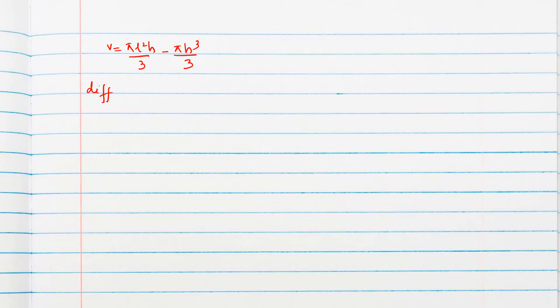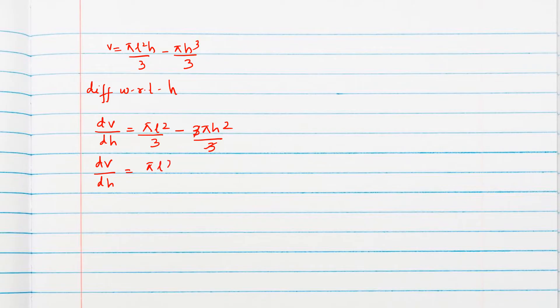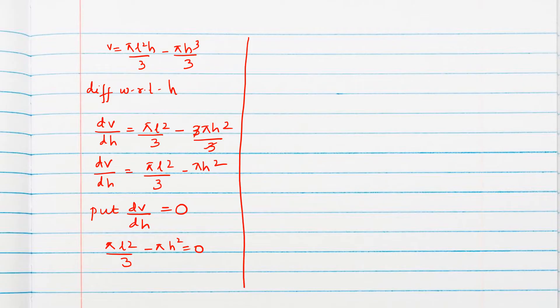We differentiate with respect to h. V = (π/3)(l²h − h³), so dV/dh = (π/3)(l²) − πh² = πl²/3 − πh². Setting dV/dh = 0 gives πl²/3 − πh² = 0, so l² = 3h², meaning l = √3 · h, or equivalently h = l/√3.